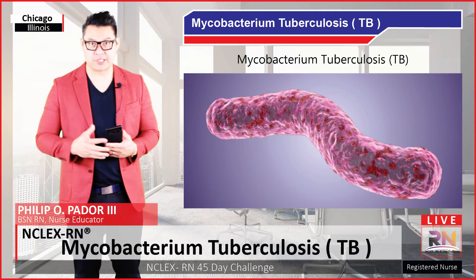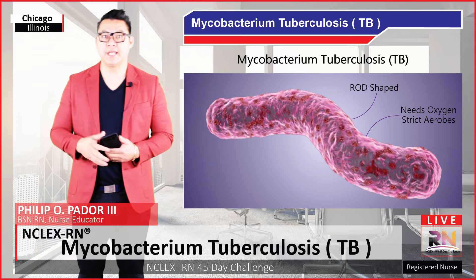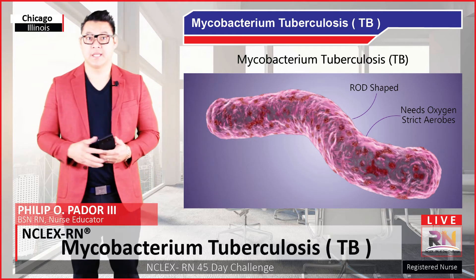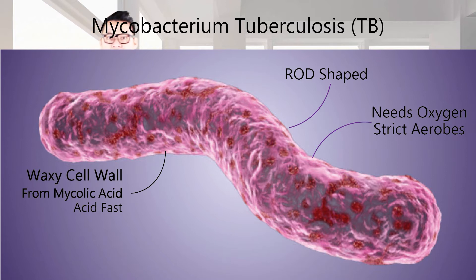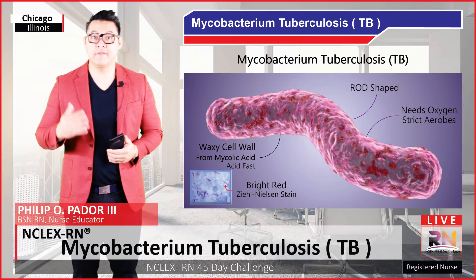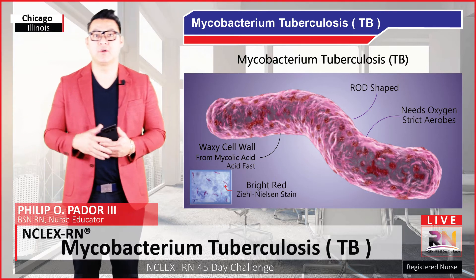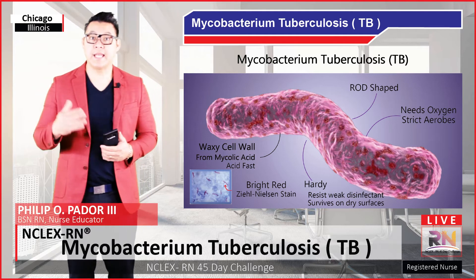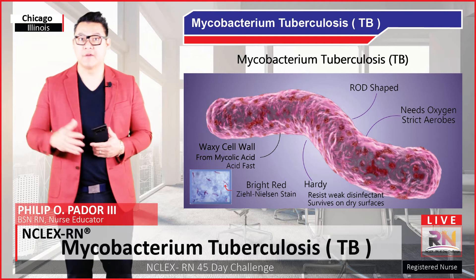Mycobacteria are an interesting bunch. They're slender, rod-shaped, and need oxygen to survive — in other words, they are strict aerobes. They've got an unusually waxy cell wall, which is mainly a result of the production of mycolic acid. Because of this waxy cell wall, they are acid-fast, meaning they can hold up to dye despite being exposed to alcohol, leaving a bright red color when the Ziehl-Neelsen stain is used. The wall also makes them incredibly hardy, allowing them to resist weak disinfectants and survive on dry surfaces for months at a time.